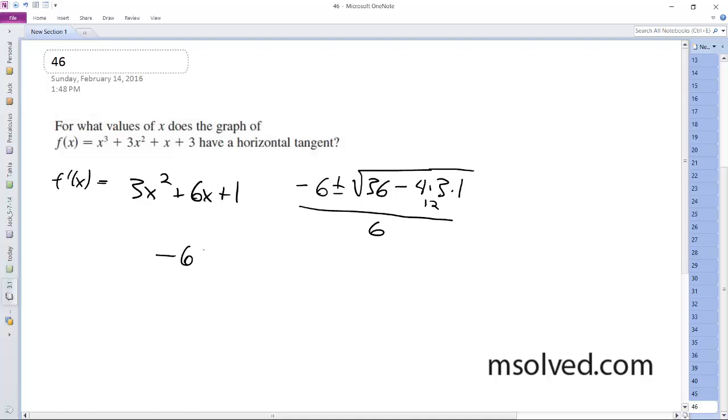So negative 6 plus or minus square root of 24 over 6. Pull out a 4, we can pull out a 4, so we get 2. So we get negative 1 plus or minus square root of 6 over 3, and that's it.